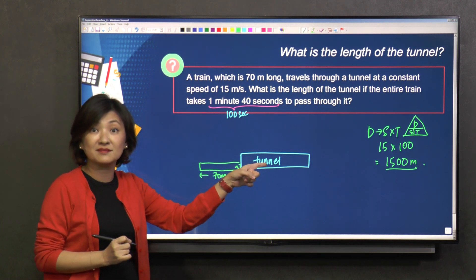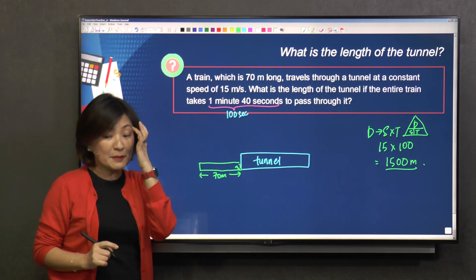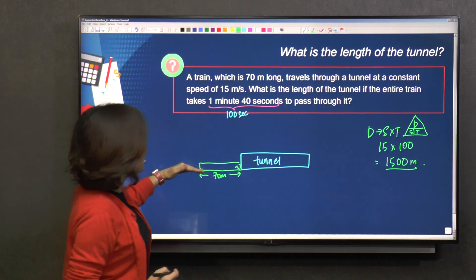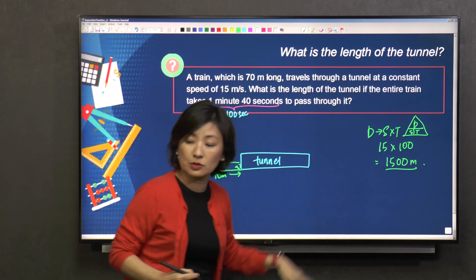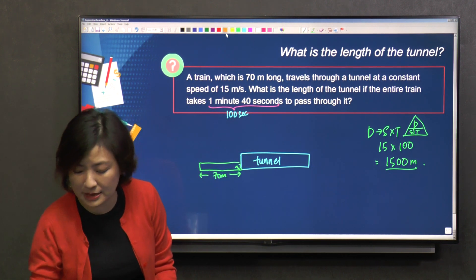Is this the final answer? It is not. Let me explain to you why. Now, if the train were to go through the tunnel, you have to make sure that the train comes out. So when the train comes out, change color.